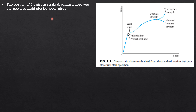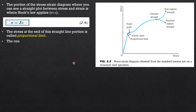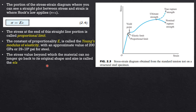The portion of the stress-strain diagram showing a straight-line plot between stress and strain, where Hooke's Law applies, is the linear elastic region. Within Hooke's Law, stress is proportional to strain — this is equation 2.4. The stress at the end of this straight-line portion is called the proportional limit. The constant of proportionality E is called Young's modulus of elasticity, with an approximate value of 200 GPa or 29 × 10⁶ psi for steel. The stress value beyond which the material can no longer return to its original shape and size is called the elastic limit.